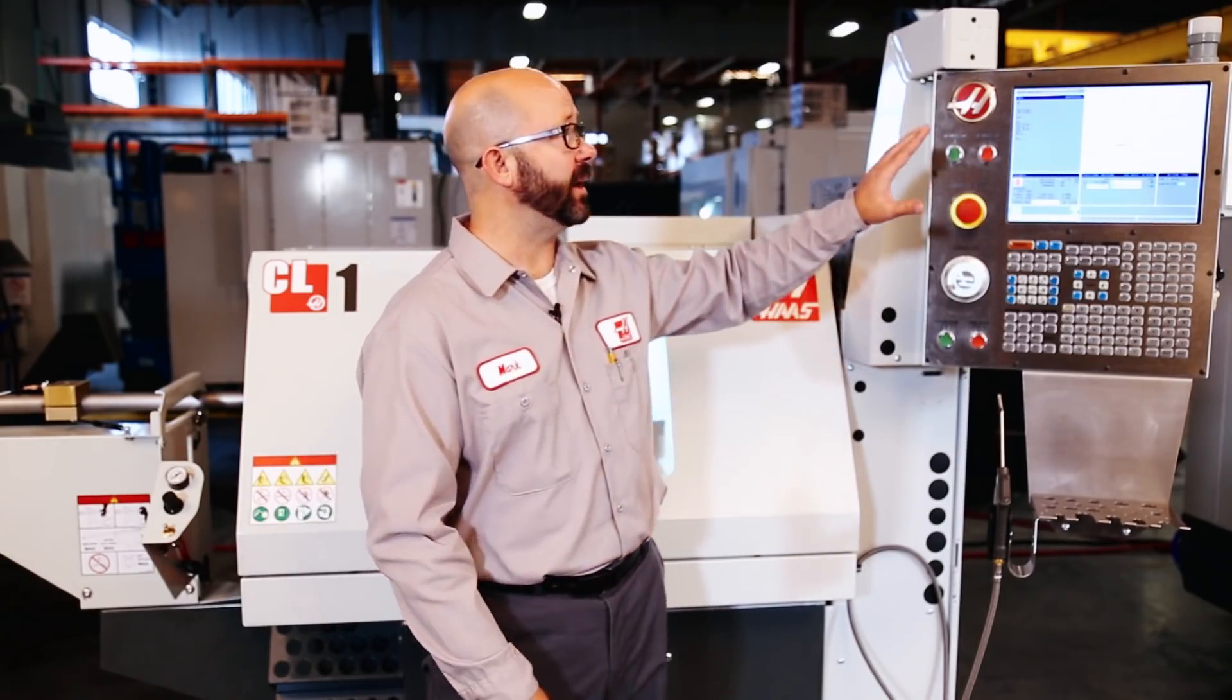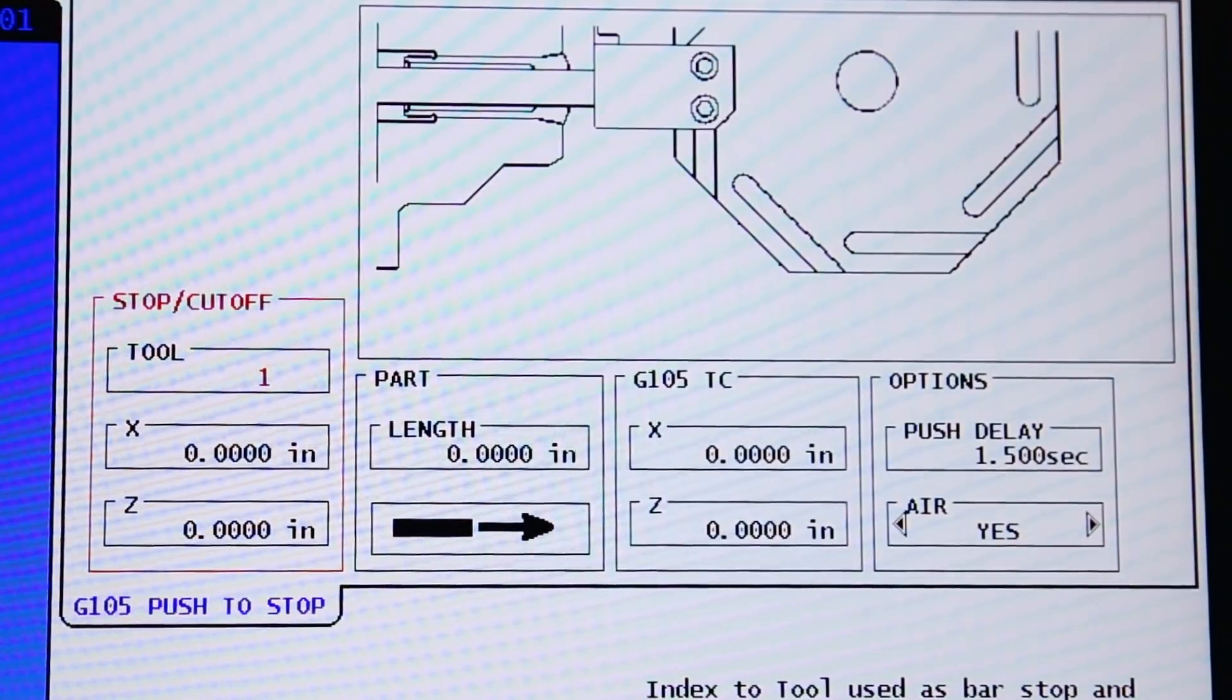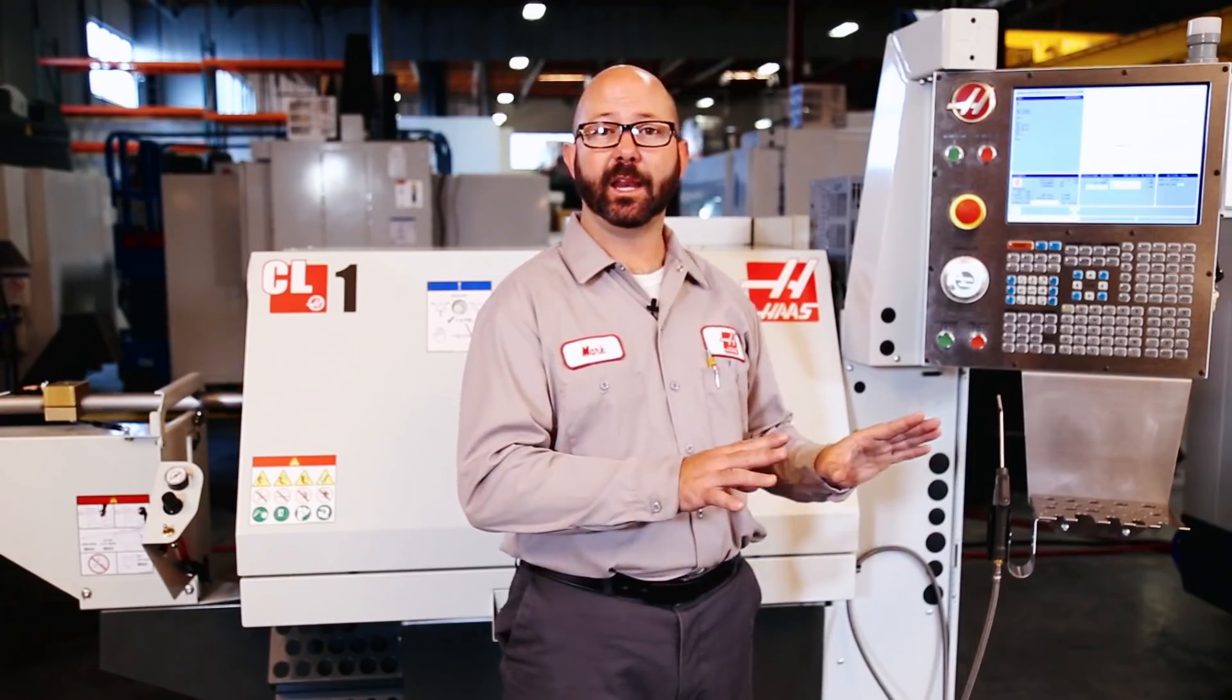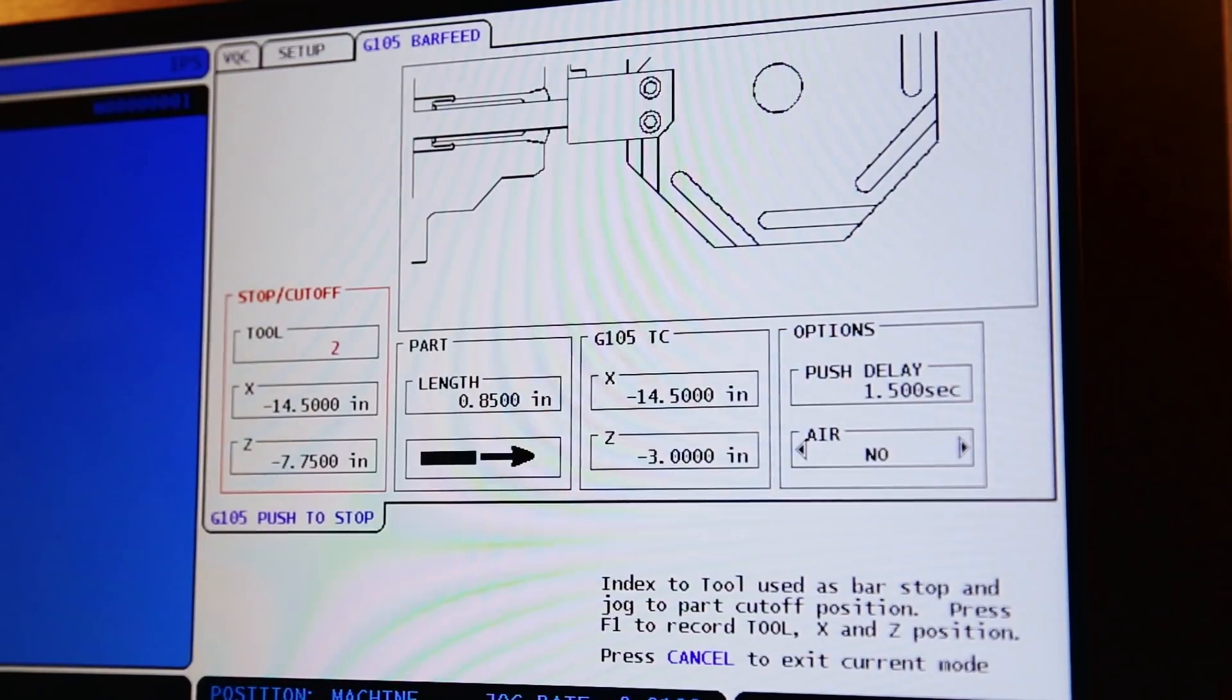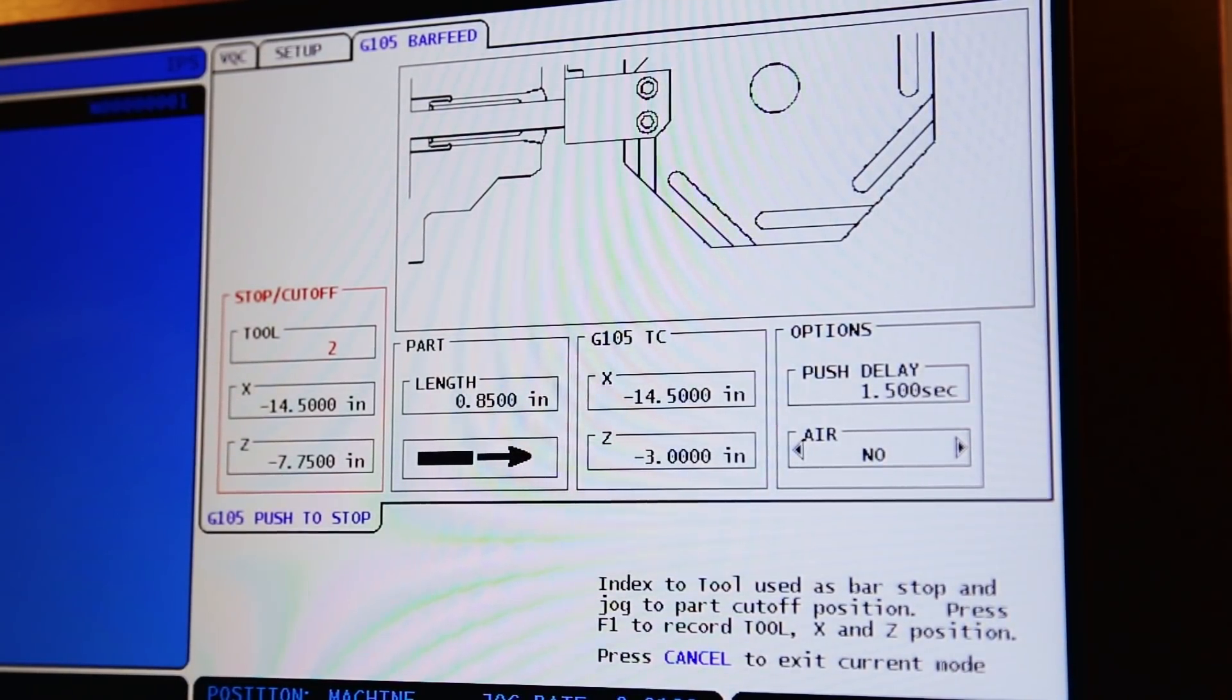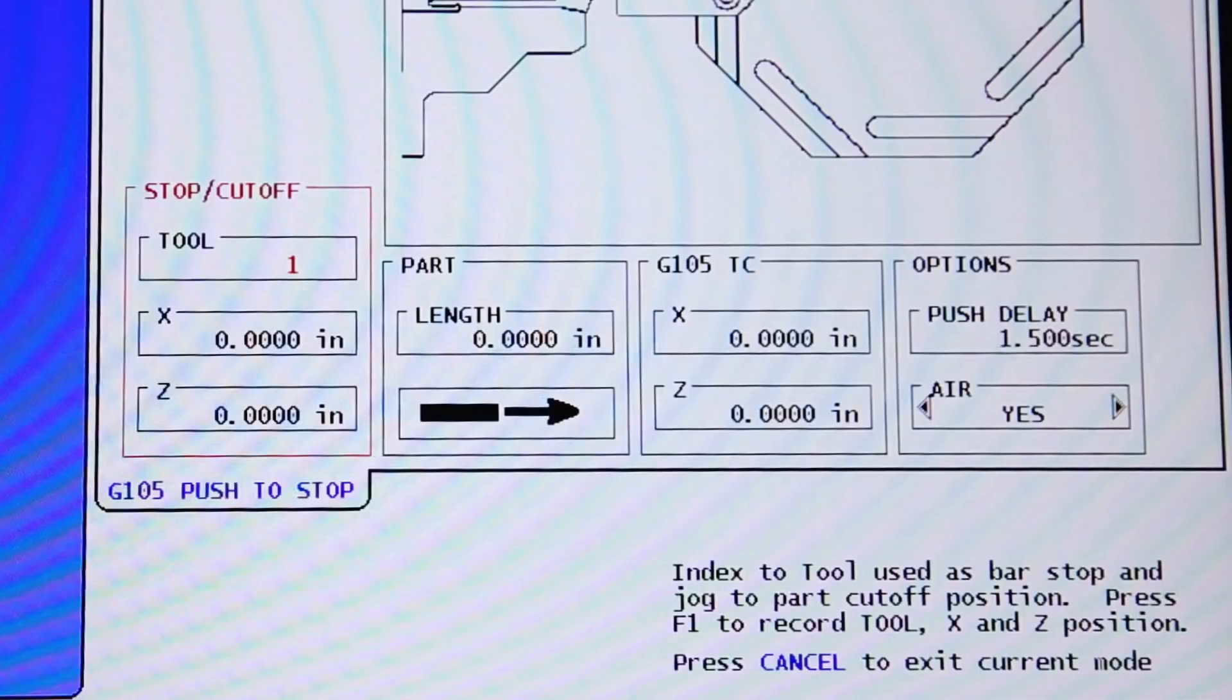Well, we can now move over to our G105 bar feed page on the control. On a classic control, you can get here by pressing MDI and then program and arrowing over to the G105 bar pusher page. Our G105 bar feed page is broken down into four columns. We'll just fill them in one at a time.